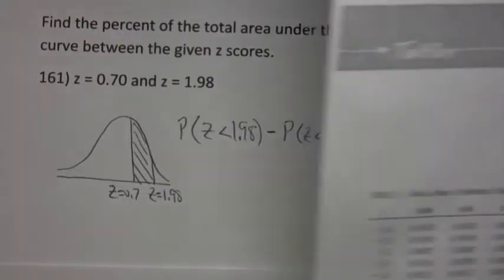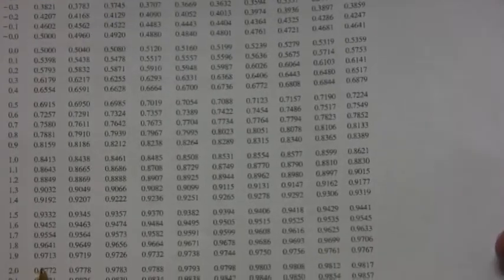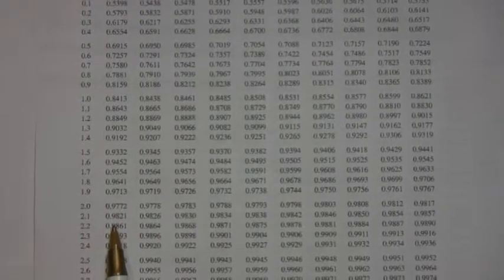If we look up 1.98 in the z-table, we're looking for 1.98. Right there. And that's 0.9761.